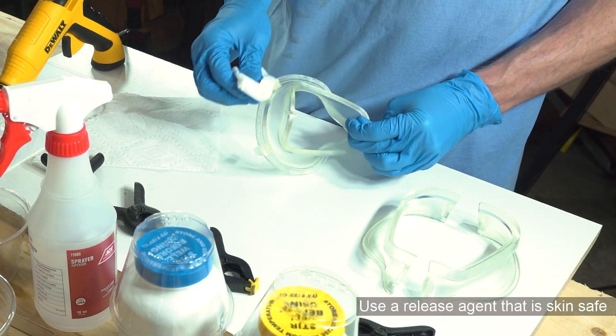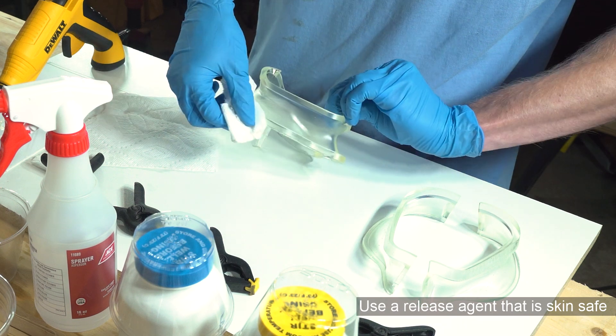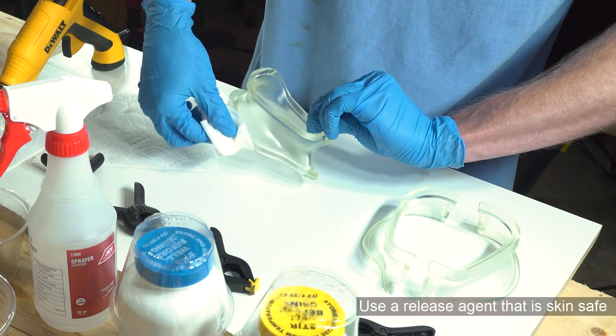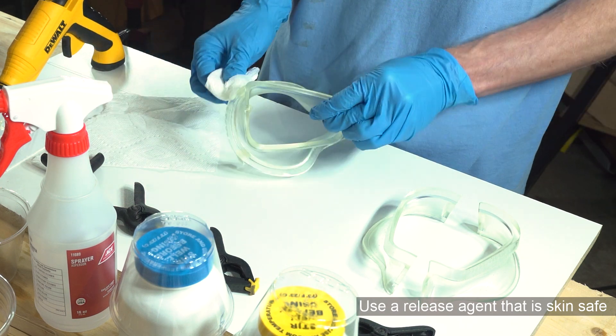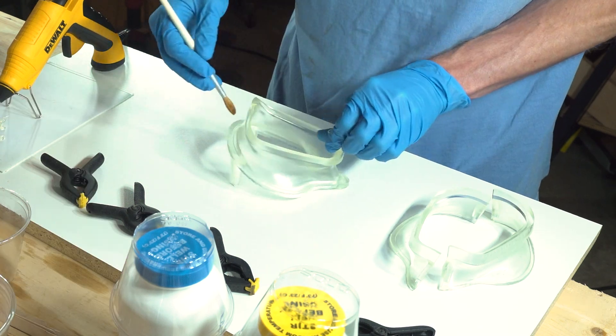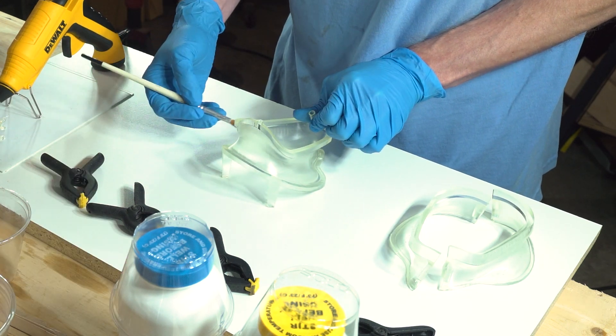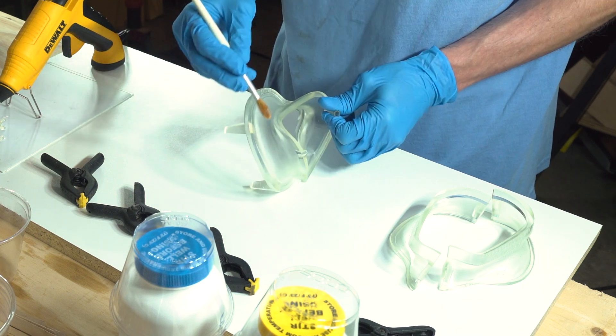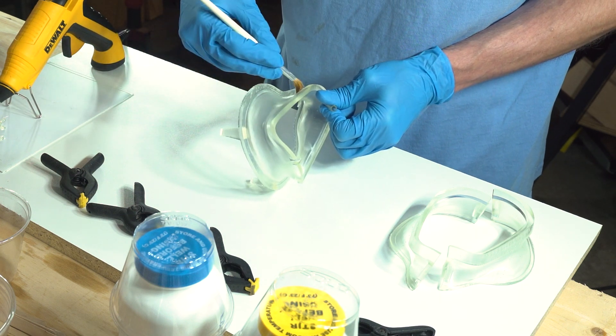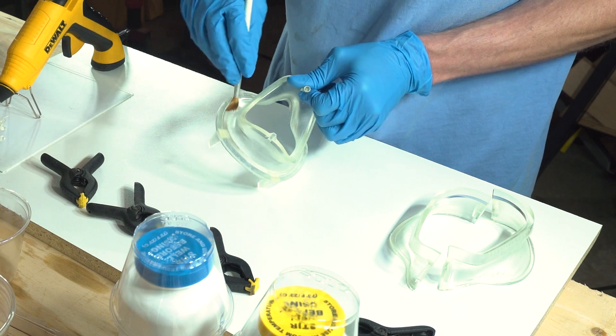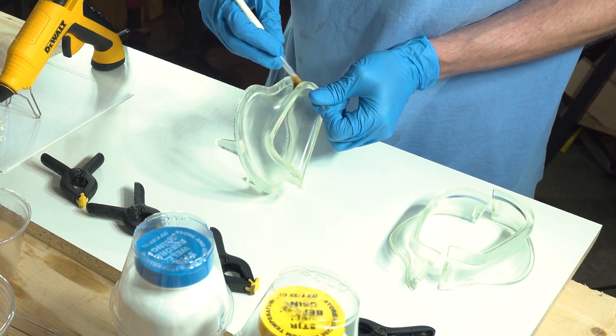I used mold release on my first attempt. Overspray had to be cleaned off of the outside of the mold after it was applied. Then using a dry brush, the release agent was spread evenly over the surface, getting it down into all of the cracks and crevices. Later in the video, I will cover why I don't recommend using this.